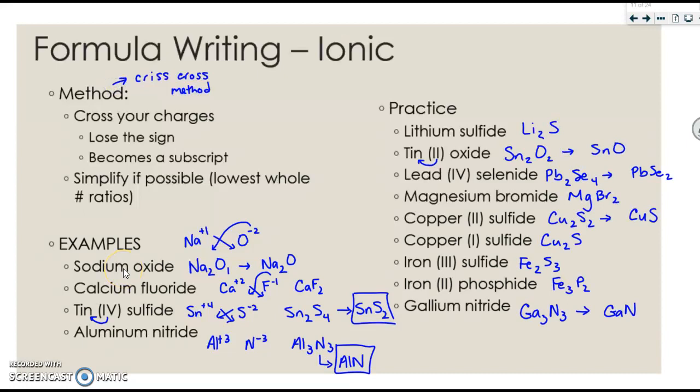Please check your answers and ensure that you simplified when you could. So lithium sulfide should be Li2S. Tin (II) oxide should simplify to SnO. Lead (IV) selenide should simplify to PbSe2. Magnesium bromide is just MgBr2. Your two coppers are different based on the charge of copper. Iron (III) sulfide should be Fe2S3. Iron (II) phosphide, and finally, gallium nitride.